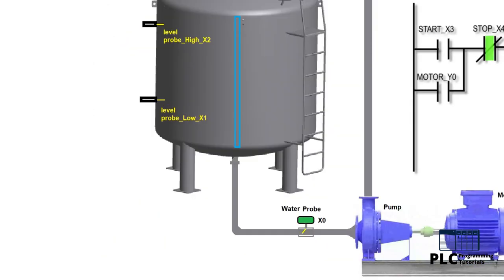This probe is used to detect the water inside the suction line. It will stop the pump if it detects no water in the suction pipe, thus preventing the pump from getting airlocked.